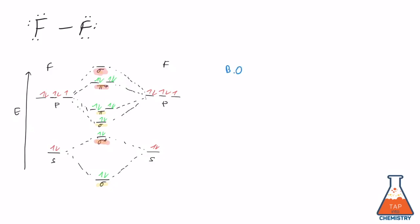The bond order is going to be eight electrons in bonding orbitals minus six electrons in antibonding orbitals, divided by two, gives us two over two, which is one.